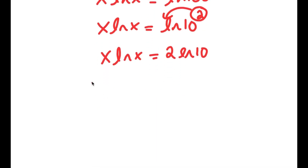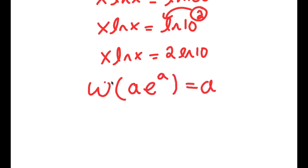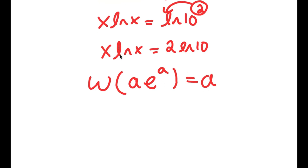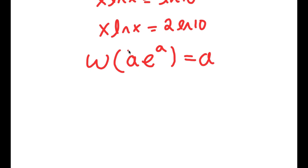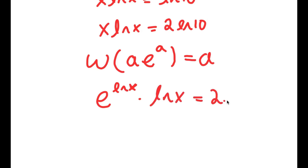There's something called the Lambert W function. If I take the Lambert W function of something in the form a times e to the power of a, this equals a. So I'm going to rewrite x as e to the power of ln x, because the e and ln cancel out and give simply x. So I have e to the power of ln x times ln x equals 2 times ln 10, which is now in the form a times e to the power of a.